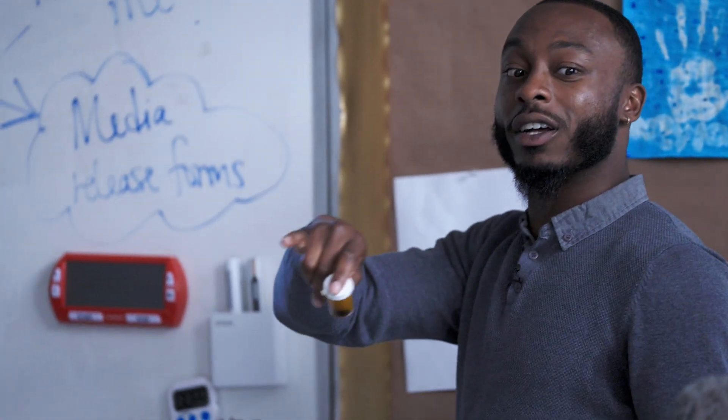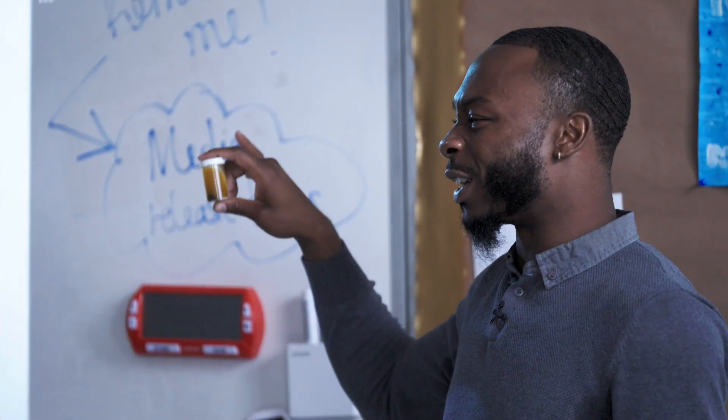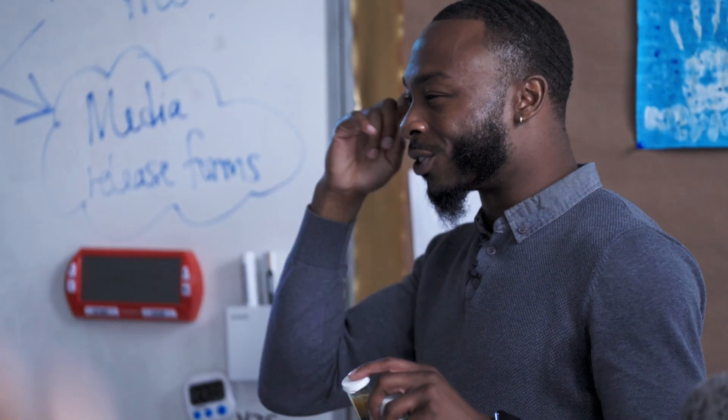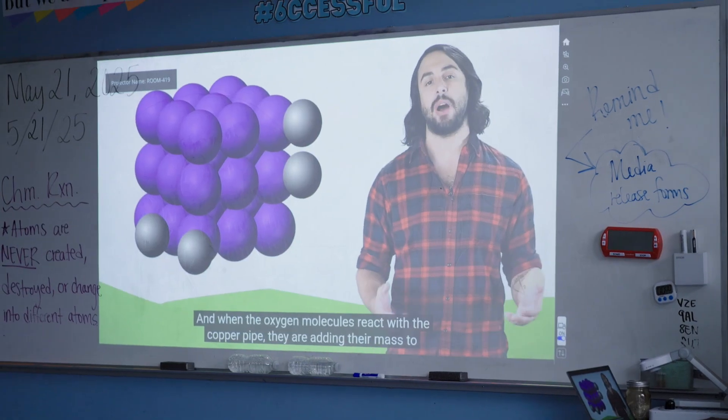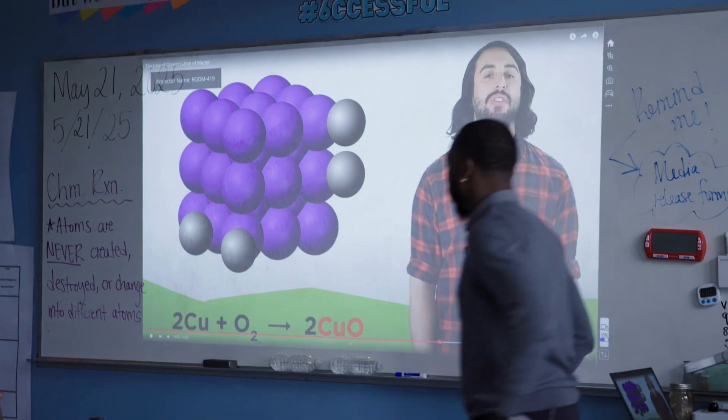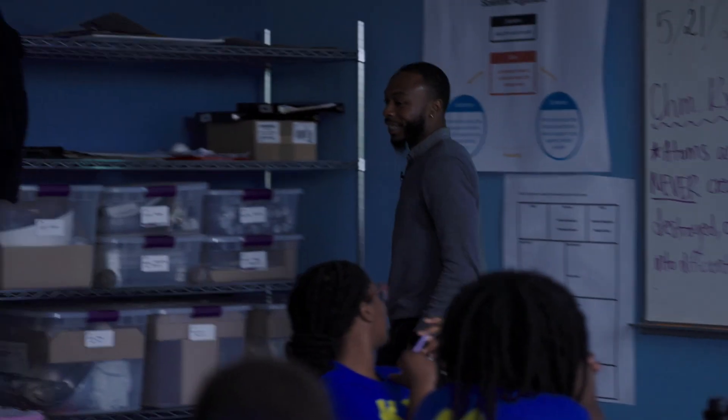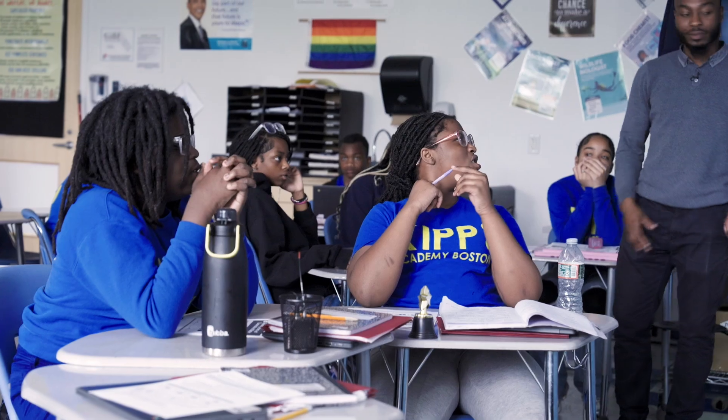Absolutely. And we saw some different substances reacting as well. Does anybody remember what those different substances were? They used fertilizer that was found in the wild, and the water came out as a reddish-brown substance. And when the oxygen molecules react with the copper pipe, they are adding their mass to the pipe. Sixth grade — can atoms be created? Can atoms be destroyed? Do atoms change into different types of atoms? No. Could we use that information — the law of conservation — to maybe calculate some of those different masses of those different substances?